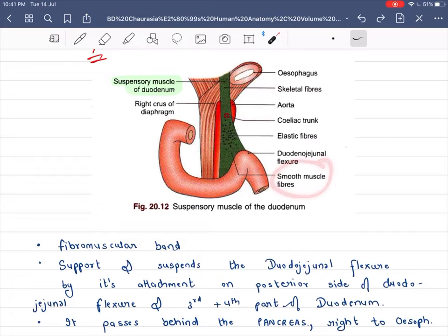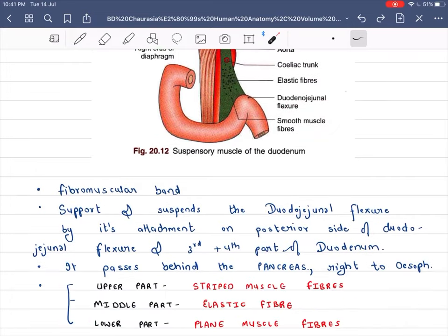And this is our smooth muscle fibers. So this is a fibromuscular band. It supports the suspension of duodenum. How it supports? It is attached to the posterior side of the duodenum, to the third or fourth part of the duodenum.